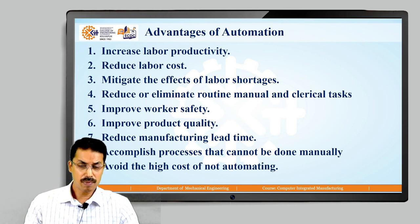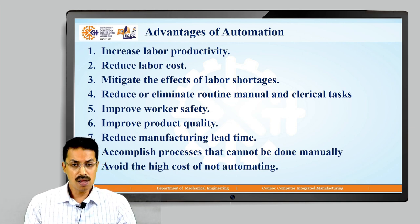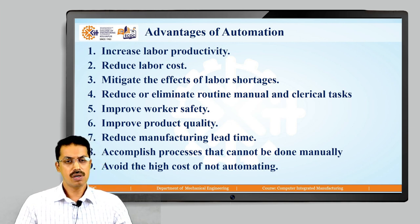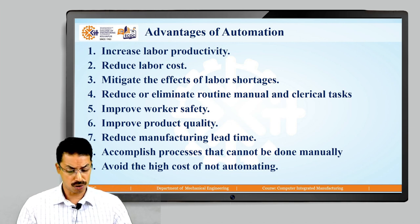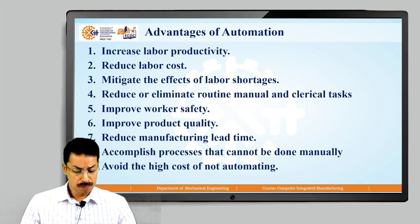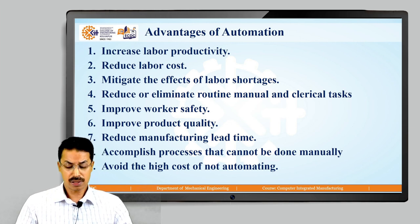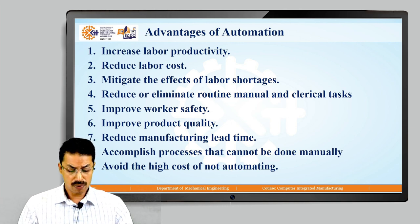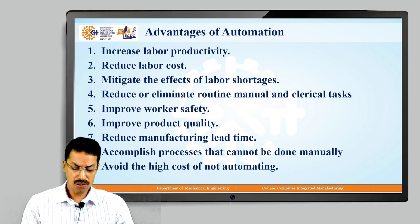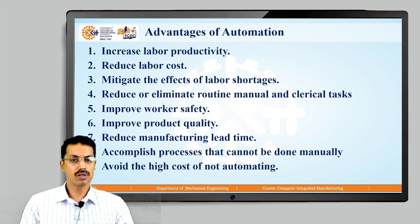Next is reduced manufacturing lead time. Lead time is the total time from the start of a manufacturing activity to its completion. Automation helps reduce the elapsed time between customer order and product delivery, providing a competitive advantage for future orders. By reducing manufacturing lead time, manufacturers also reduce work-in-process (WIP) inventory.